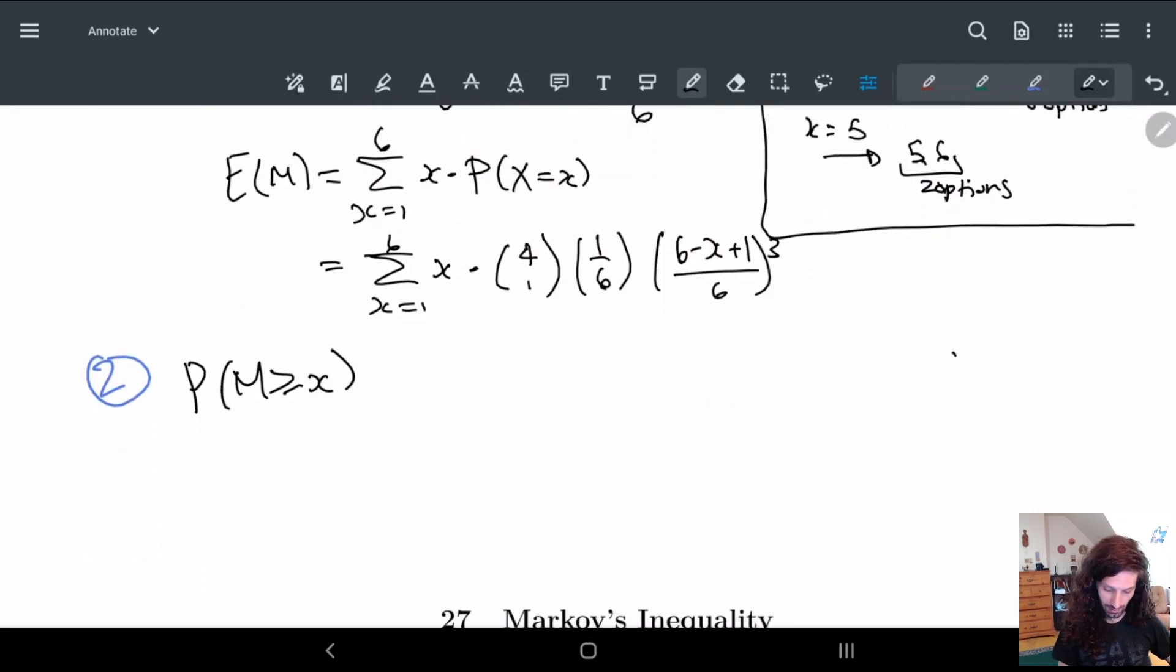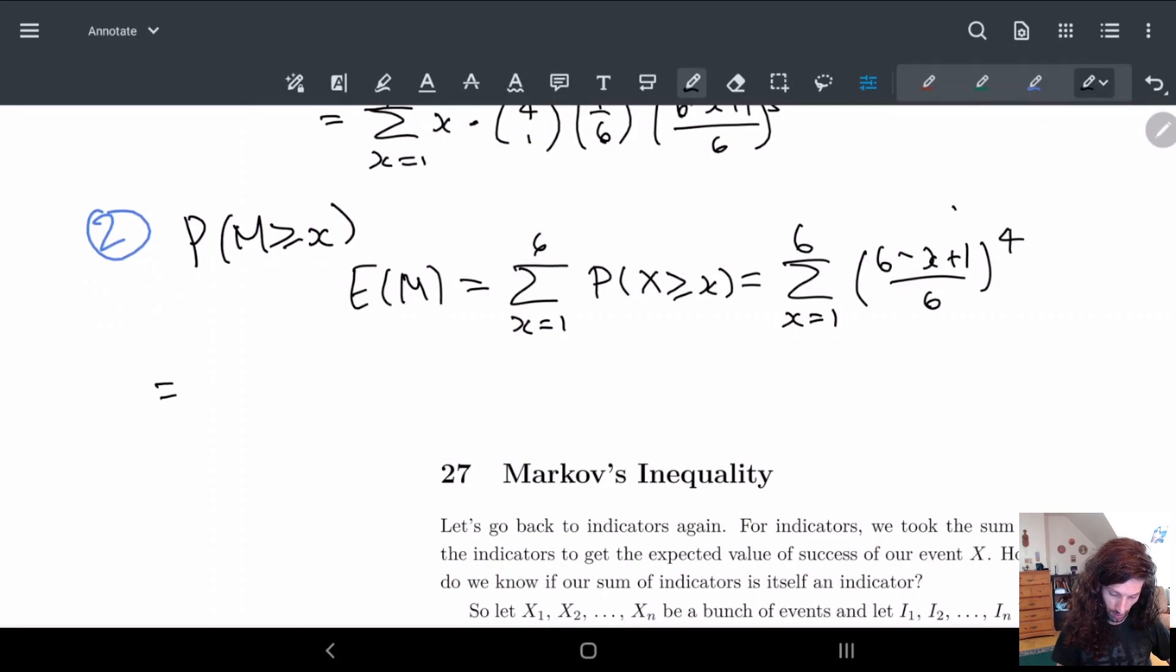So in other words, what we have in this case is E of M is just the sum. So remember, in this case, we just look at x greater than or equal to little x. In this case, we already know what this is. This is just 6 minus x plus 1 over 6 to the fourth. So this, actually, we can just do by hand. It's really not that hard. So we have 6 minus 6 plus 1 over 6 to the fourth, and then notice here, 6 minus 6 is zero. So we got 1 sixth.